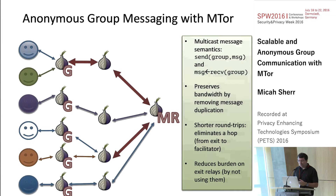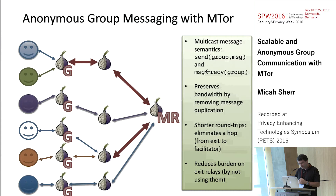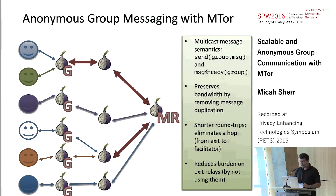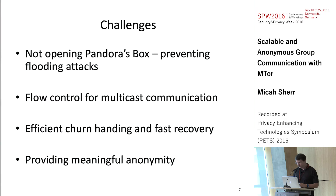We're introducing multicast messaging semantics to Tor. Rather than sending to a particular IP, you send to a group identifier and people can join that group — like a pub/sub system. It preserves bandwidth by removing message duplication, offers shorter round-trip times by eliminating the extra hop between exit and facilitator, and reduces the burden on exit relays, which are already overtaxed, by simply not using them.